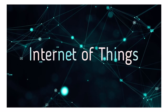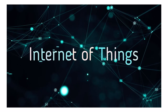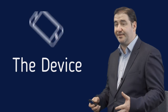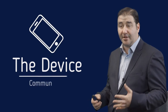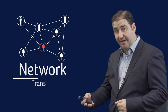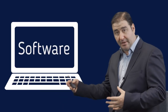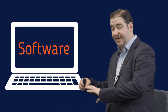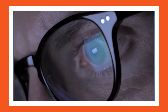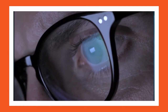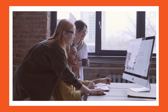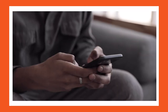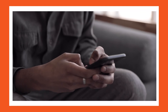IoT has effectively three components. One is the device that communicates, the network that transfers the information over to the software or the IT component where it is analysed, displayed and visualised, alerts set up — and that is your typical architecture of IoT.